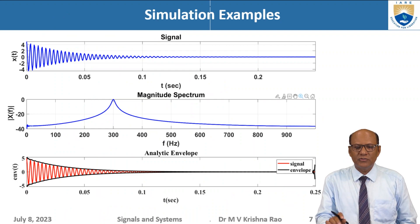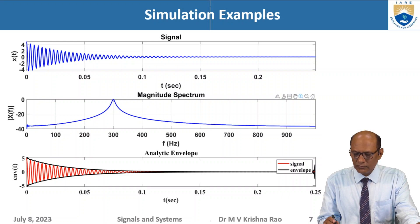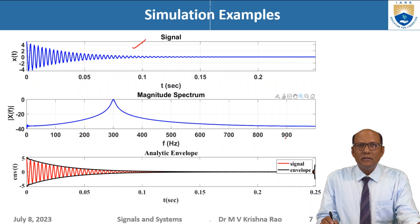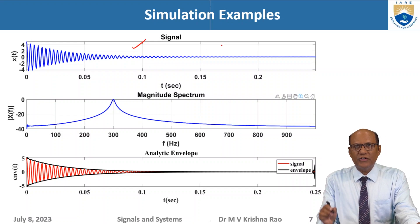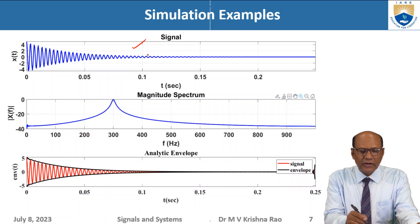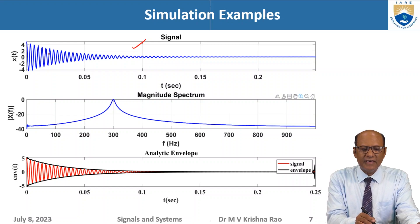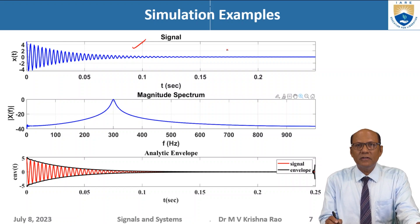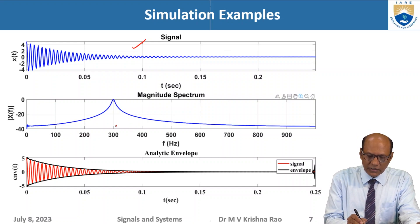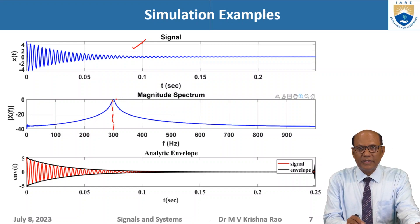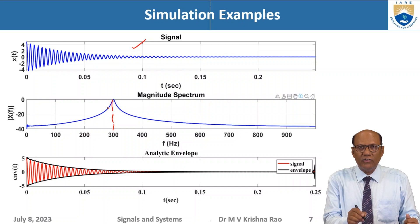Now let us look at some simulations. I have taken a decaying exponential signal modulated with a high frequency sine wave at a spot frequency. The spectrum of this signal is like a very narrow band filter — not flat, it has a maximum at one point and then decreases. The dominant frequency is around 300 Hz, but it is a continuous spectrum.